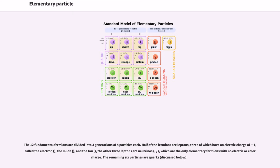The 12 fundamental fermions are divided into three generations of four particles each. Half of the fermions are leptons, three of which have an electric charge of minus one: the electron, the muon, and the tau. The other three leptons are neutrinos, which are the only elementary fermions with no electric or color charge. The remaining six particles are quarks.